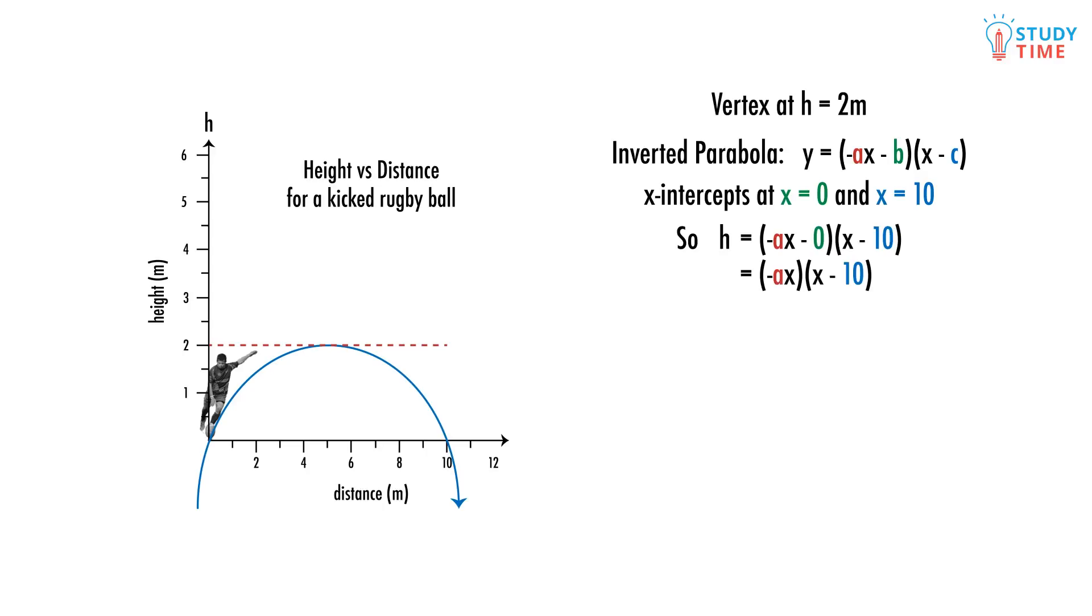If we put this together, we can obtain the equation h equals negative ax plus 0, times x minus 10. But this isn't our final equation. We need to adjust the steepness of the parabola so our maximum is at h equals 2. And we do this by substituting our midpoint at x equals 5, which is halfway between our x-intercepts, and our maximum h equals 2, and solve for a.